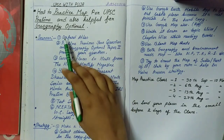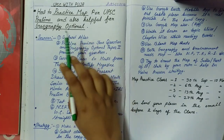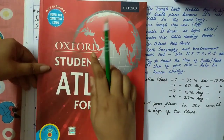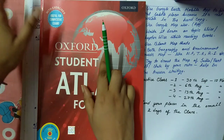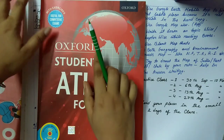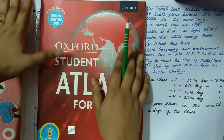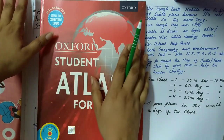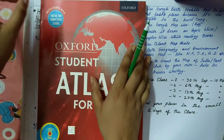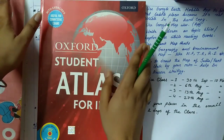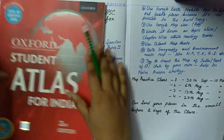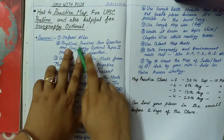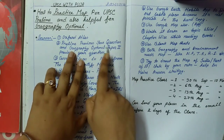The first source is the Oxford Atlas — this is the book for map practice. There is another book from Black Swan, though I'm not entirely sure about it. I follow the Oxford one, but I've heard the Black Swan one is also good for UPSC mains and prelims.